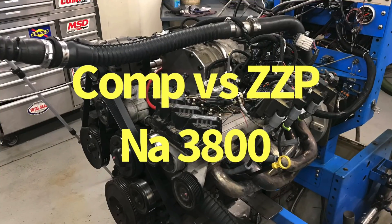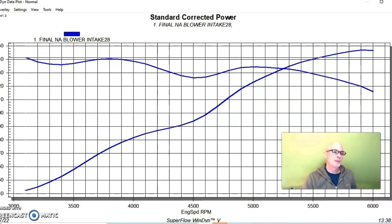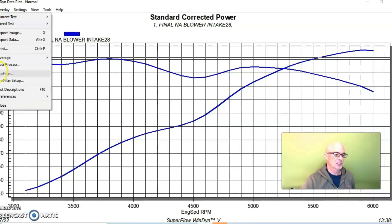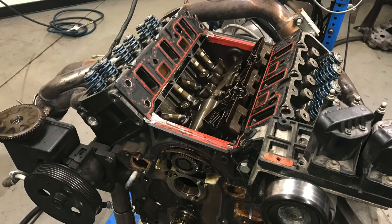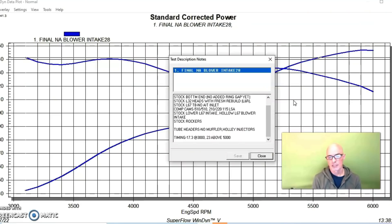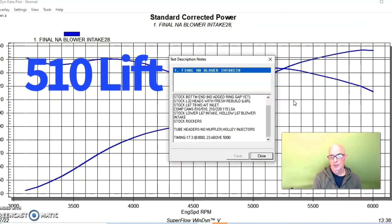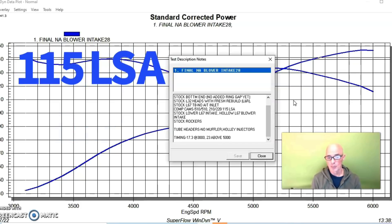Our first comparison of the smaller comp cam and the larger ZZP cam, we ran on our NA combination. Let me take a look. This was an L67 short block. We had L32 heads on it. They were freshly rebuilt. We had the comp cam first—this is 510 lift, 210 to 220 degree duration split, 115 degree lobe separation angle.